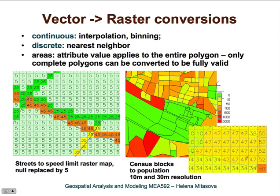One thing to remember when converting vector polygons is that the value is associated with the entire polygon. So if you have a situation where the polygon is cut off, you can't just assign those values — for example, if you have the number of people living in that area and you wanted to compute the density per square kilometer, your numbers will be wrong because you are not working with the complete polygon. So you just need to be careful about that.